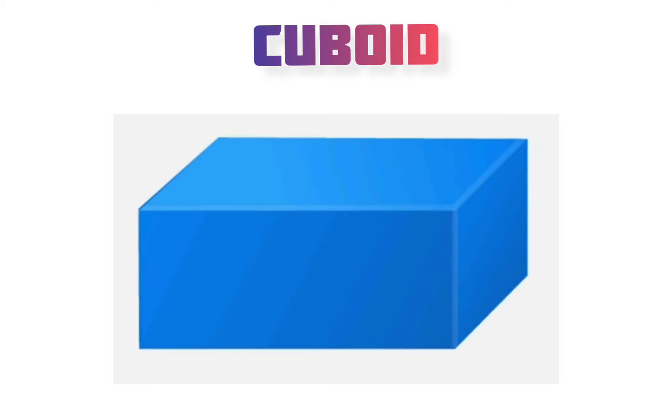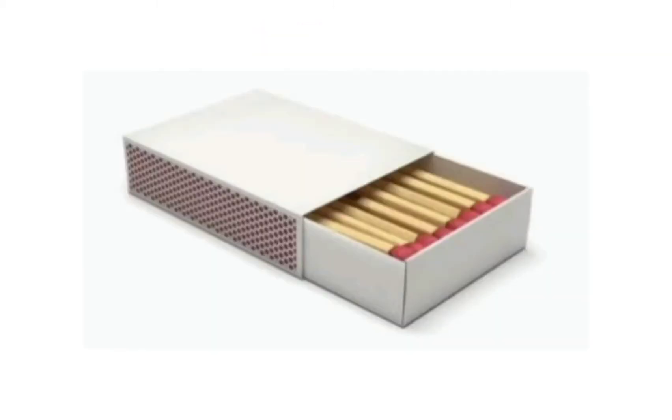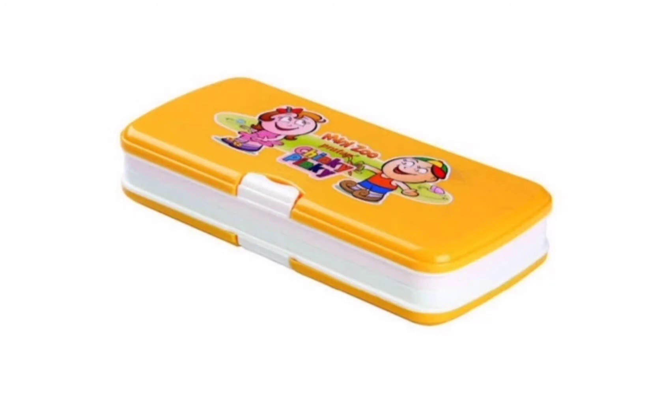It has 6 faces, 12 edges and 8 corners. The examples of cuboid are matchbox, pencil box and books.